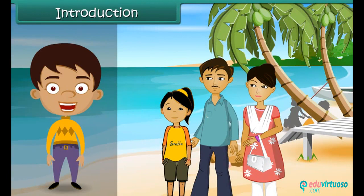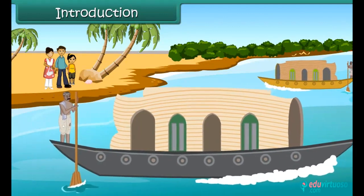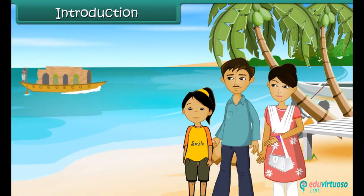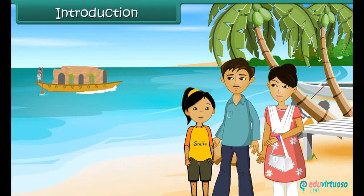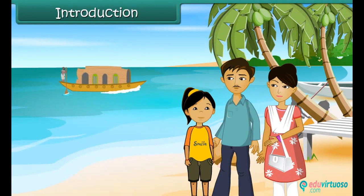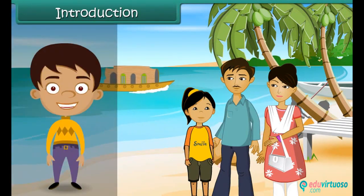Simai is spending the Shahra holidays at Kerala with her parents. She notices some strange looking boats on water. These boats have huts built on them. She inquires her father about them. Her father tells her that they are houseboats. Tourists stay in them and enjoy the scenic beauty around.